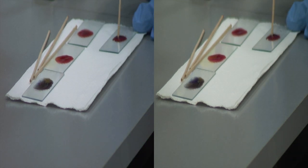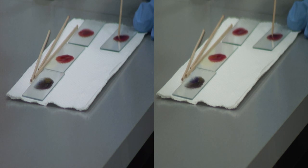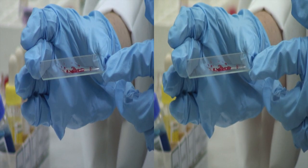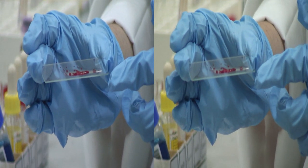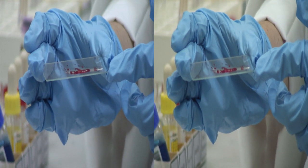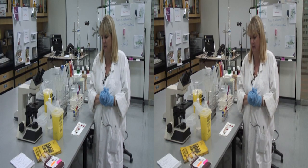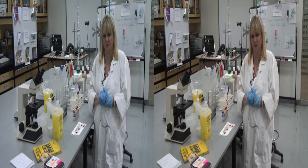Blood is mixed gently for around a minute using the orange stick to observe for agglutination. After around a minute, it is clear that there is agglutination with the anti-D. The final group of the donor can therefore now be called a group A RH positive.